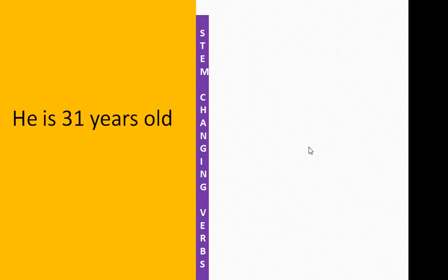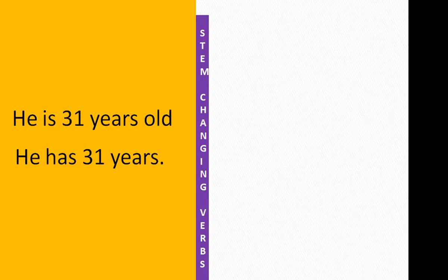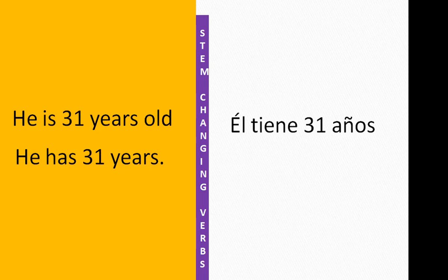'He is 31 years old.' In Spanish, when you talk about age, it is considered something a person possesses. So while in English you say 'He is 31 years old,' in Spanish you actually say 'He has 31 years.' Age is something that a person possesses. So: ÉL TIENE TREINTA Y UN AÑOS.